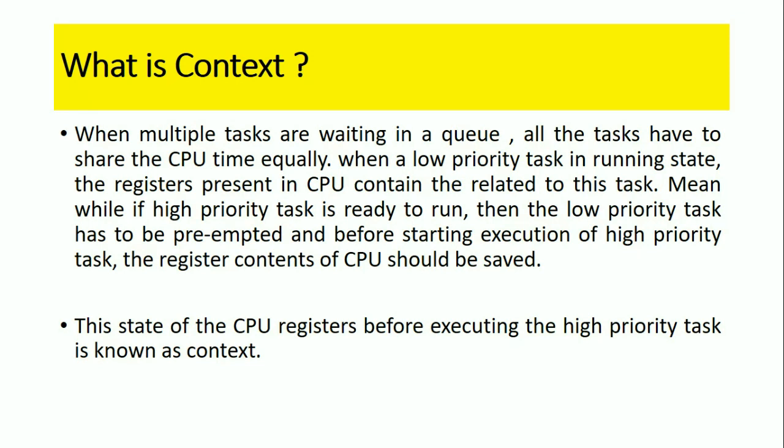First we will see what is context. We already know that a processor will do multiple tasks. When multiple tasks are waiting in a queue, all the tasks have to share the CPU time equally. When a low priority task is in running state, the CPU registers will contain the data related to that low priority task.